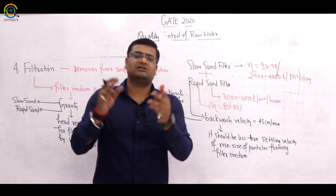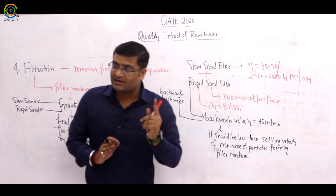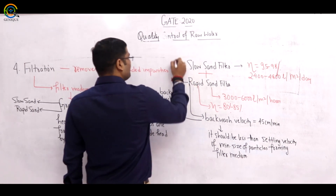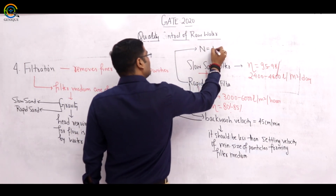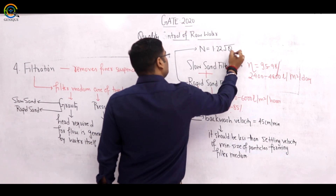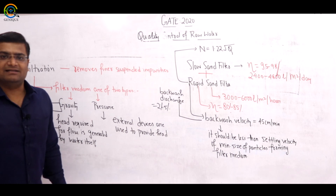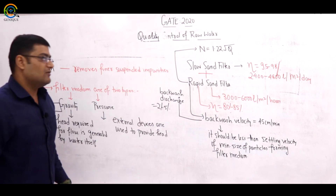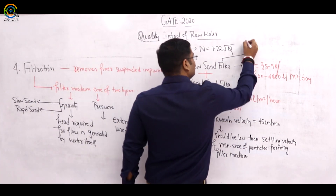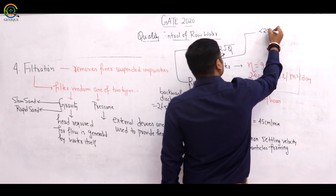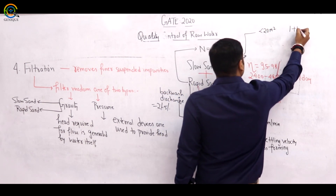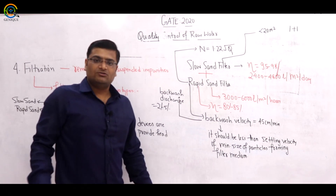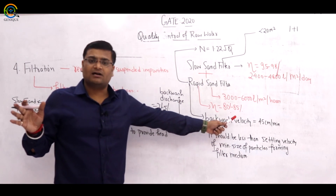Slow sand filter requires a larger area, whereas rapid sand filter requires less area. For rapid sand filter, the number of filters required is calculated by the formula: N = 1.22 × √Q, where Q is discharge in MLD (million liters per day). For slow sand filter, a standby filter is always kept additionally — if one filter is under cleaning or maintenance, the standby filter operates.